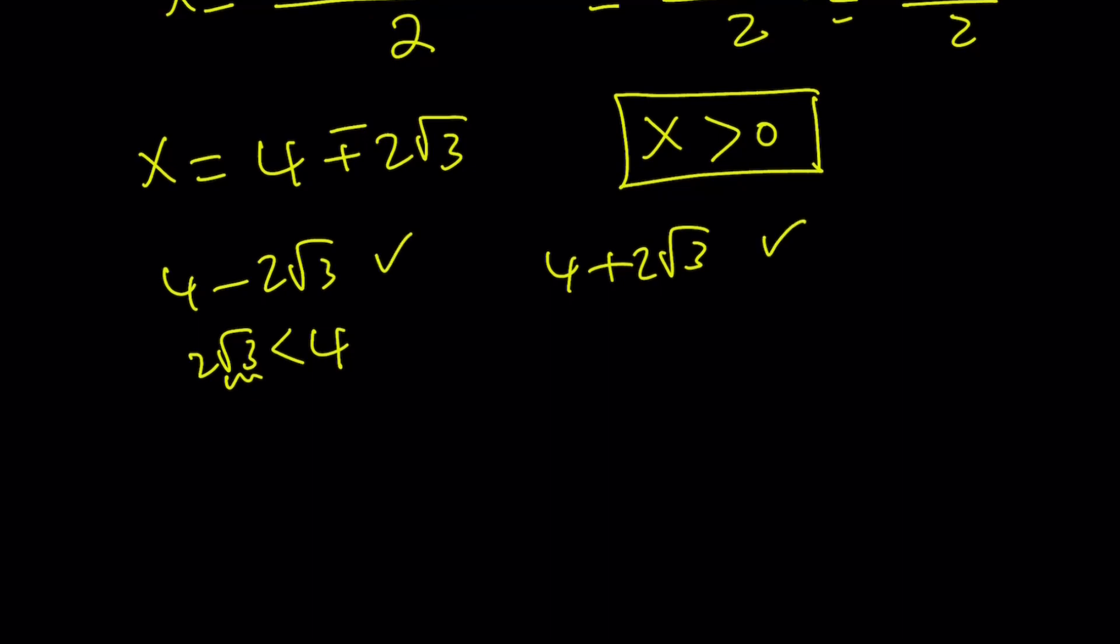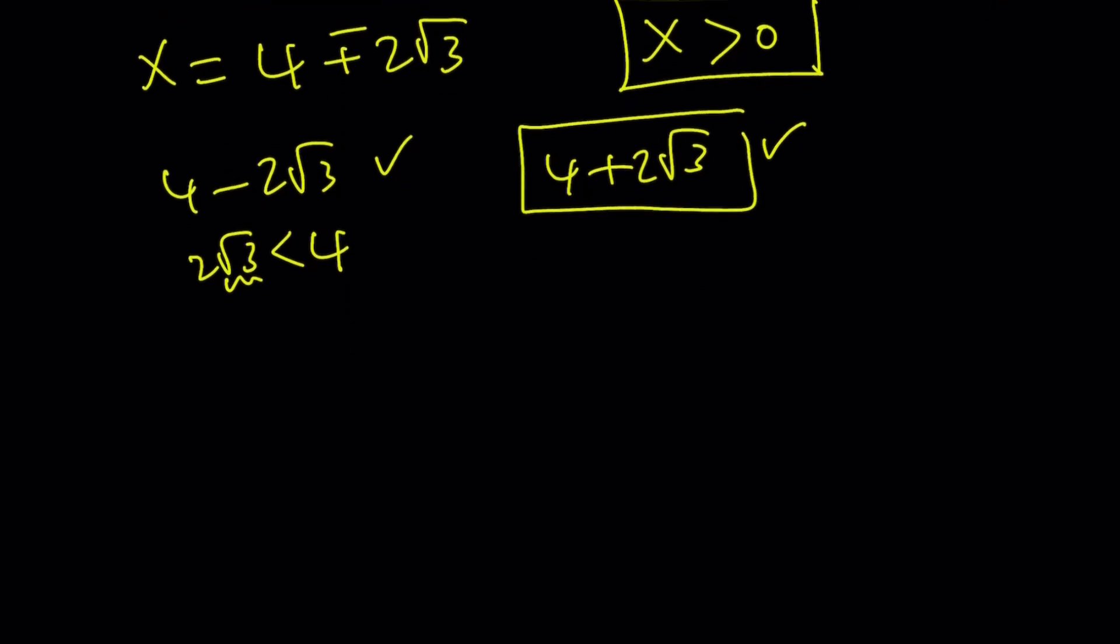So how about using this one? Well, that one is more positive. Kind of like Animal Farm. All animals are equal. All numbers are equal, but some are more equal than others. Anyways, 4 plus 2 root 3. So we're going to do the following. We solve the equation, and then we're supposed to evaluate this. So let's go ahead and substitute the x value that we found. So replace x with 4 plus 2 root 3 everywhere.